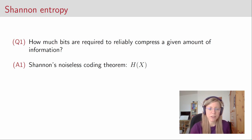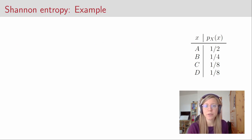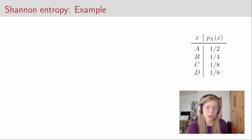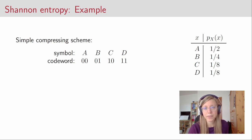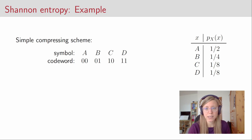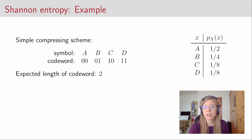To understand this better, consider a random variable with four possible outcomes a, b, c, and d, distributed such that a occurs with probability 1/2, b with probability 1/4, and c and d both with probability 1/8. A very simple compression scheme is to use two bits and encode the four letters: a as 00, b as 01, c as 10, and d as 11. The expected length of a codeword is then two, because the length of every codeword in the scheme is two. But the question is: can we do better than that?